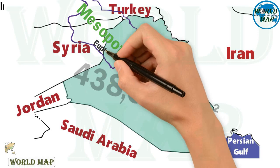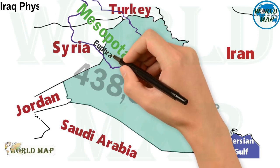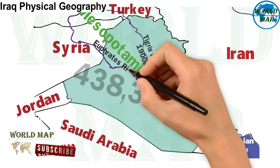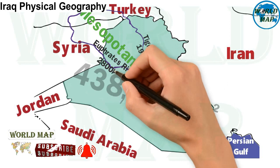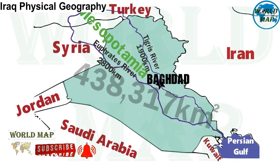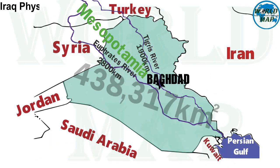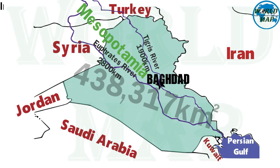The Euphrates is the longest river in southwest Asia, at 2,800 kilometers long, and one of the two main constituents of the Tigris-Euphrates river system. The river rises in Turkey and flows southeast across Syria and through Iraq.